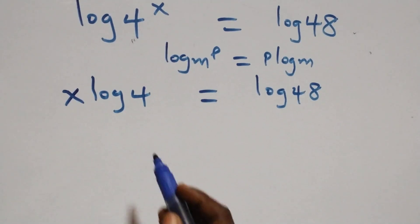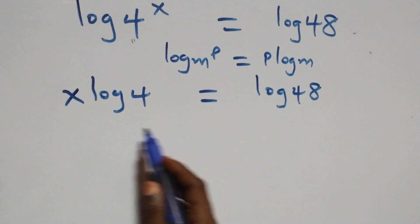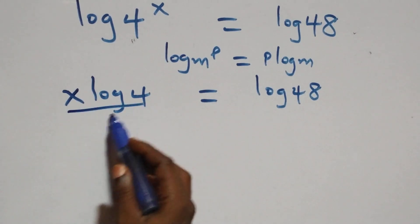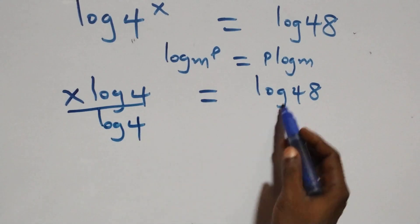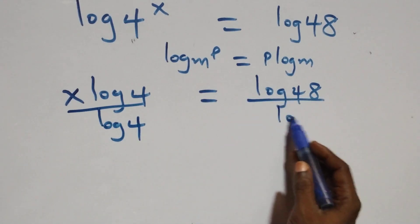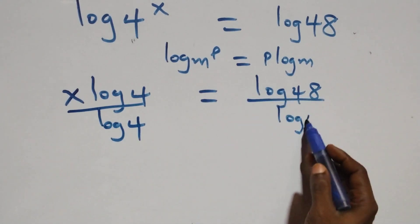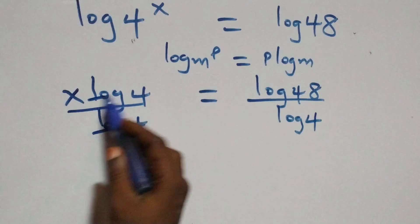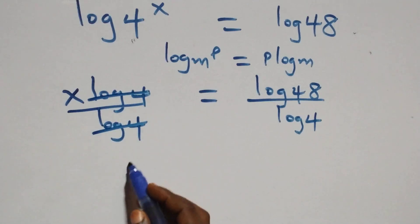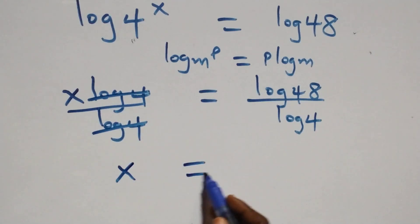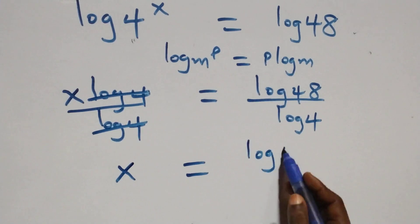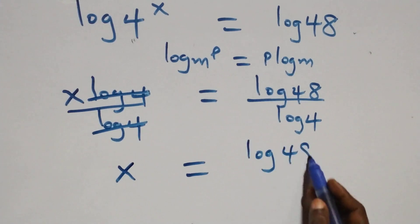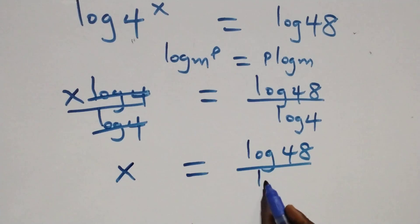The next step here, divide both sides by log 4. Divide this side by log 4, also divide this side by log 4. Log 4 cancels each other and we have x left, which is equal to log 48 over log 4.